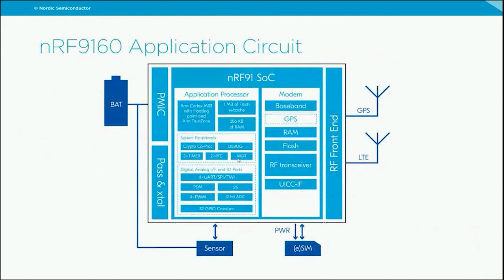All in all, the NRF9160 application circuit is really what you're looking for when building an asset tracker — a highly integrated system-in-package with a modem, communication and GPS antennas, a Cortex-M33 application processor with 1 megabyte of memory and peripherals for processing data and connecting sensors for health monitoring, environmental monitoring, and package handling. Together with a SIM card and a battery, you have everything needed for a complete application circuit on a four-layer PCB.